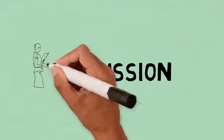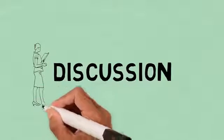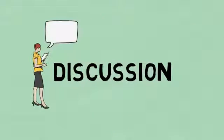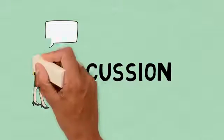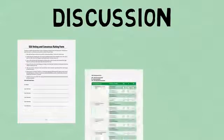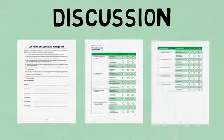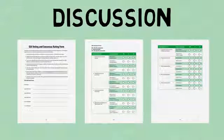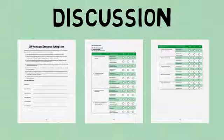Team members discuss the interventions and their individual ratings. This promotes thoughtful consideration of interventions the SEA may require or recommend in their state ESSA plan and funding applications. The facilitator uses the SEA voting and consensus rating form to record the team's recommendation for each intervention after the team votes, engages in discussion, and comes to consensus.